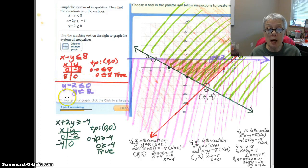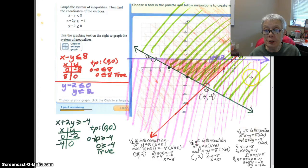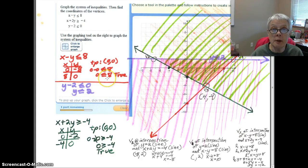Finally, we come to the purple line Y minus 2 is less than or equal to 0. This is just a disguised version of Y is less than or equal to 2. Y equals 2 is a horizontal line. Y is less than 2. It's all of the Y coordinates that are less than 2. So I shaded down, but I could have chosen 0, 0, and I would have gotten that 0 is indeed less than 2, so I would have shaded in the 0, 0 direction.